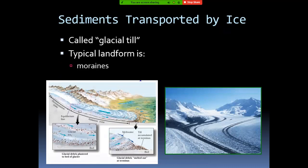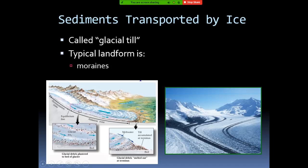In some countries, sediments can be transported by ice. When ice is exposed to temperature it melts, and as it melts it slumps. As it moves, it creates friction with the underlying rocks, and that compression force disintegrates the rocks, which are then carried to the place of deposition. This is called glacial till, and a typical landform associated with it is called moraines.